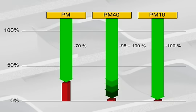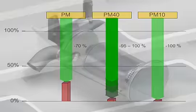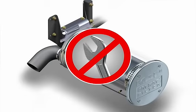Compared to current particle filters, the system has the considerable advantage that it is self-regenerating. That is, the filter doesn't have to be replaced or cauterized on a regular basis. The PM-CAT is thus totally maintenance-free.